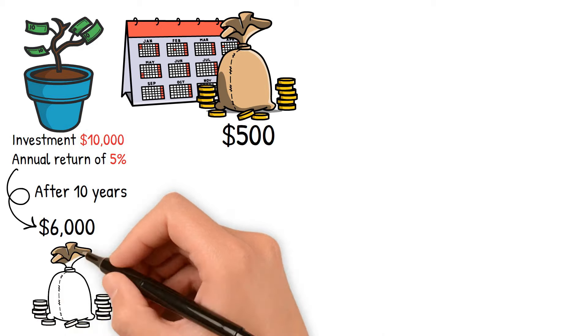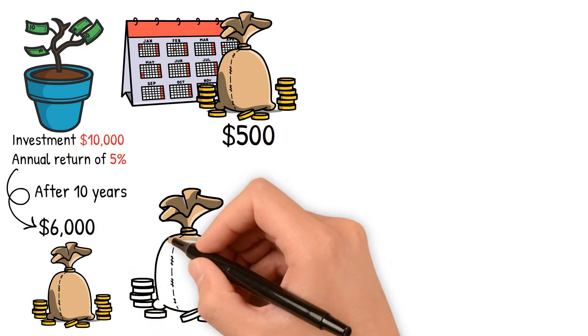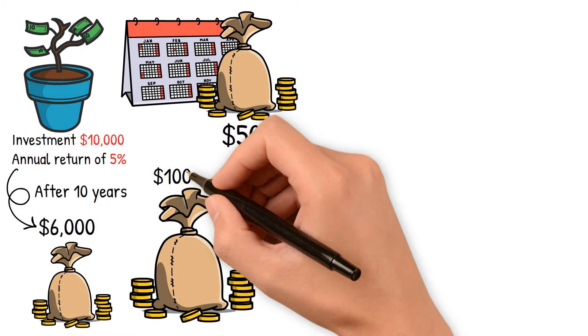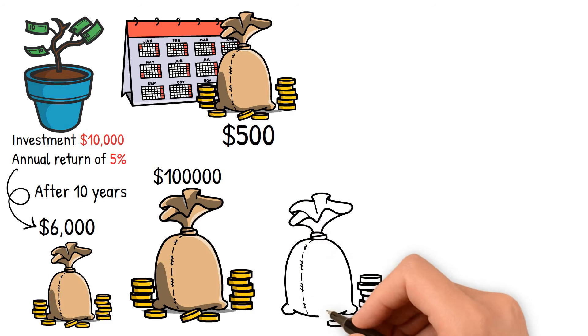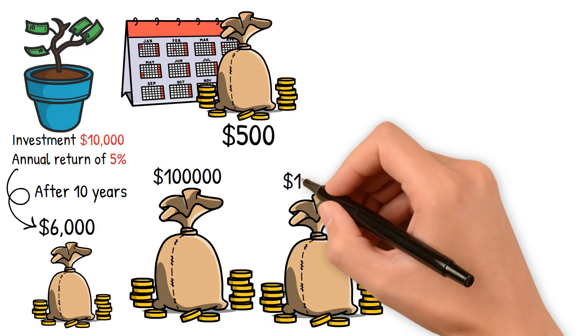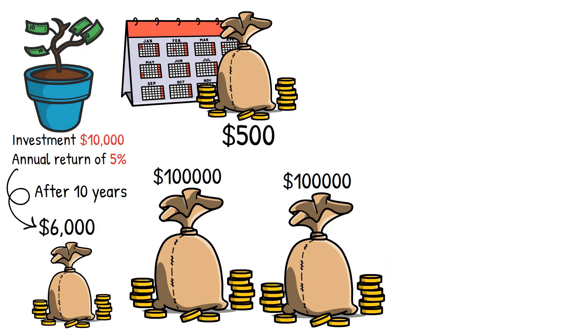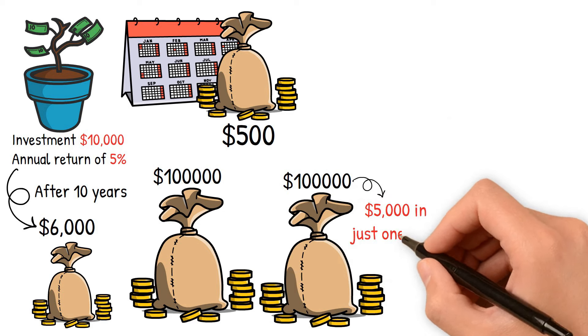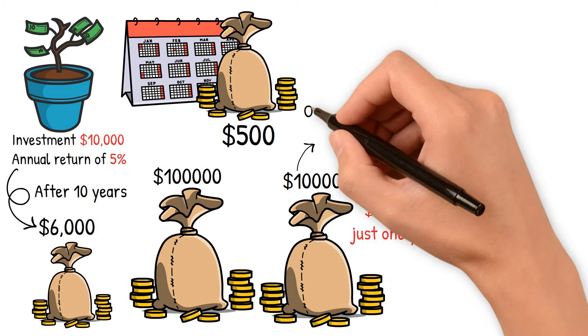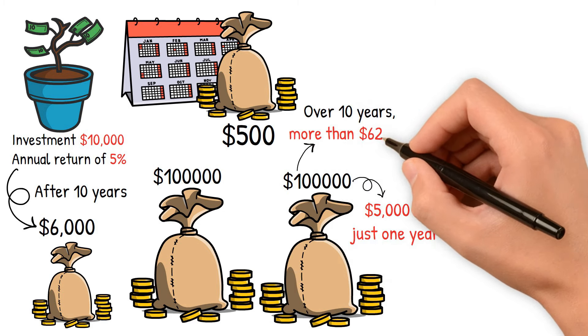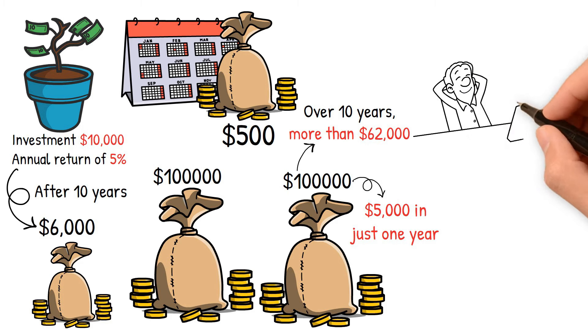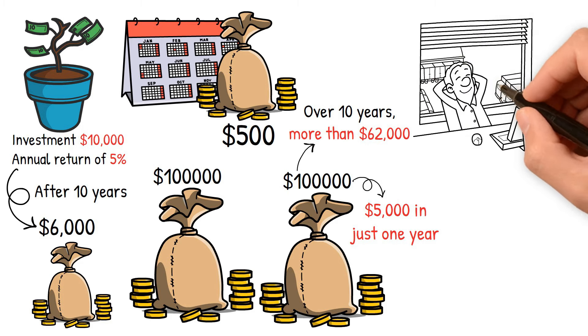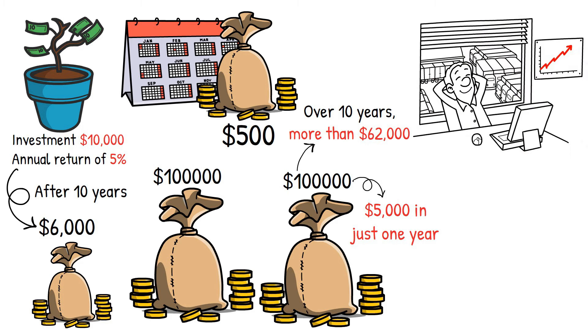Now, $6,000 might not seem like a huge amount, especially when you compare it to what someone with $100,000 would earn. If you had $100,000 invested at the same 5% return, you'd make an extra $5,000 in just one year. Over 10 years, that's more than $62,000 added to your savings. It's easy to see why it's so much easier to grow your wealth after you've already built up a solid base.